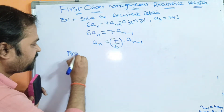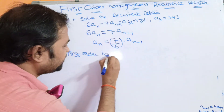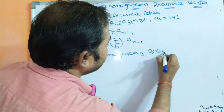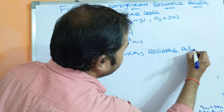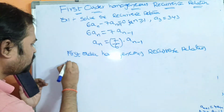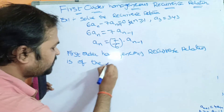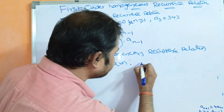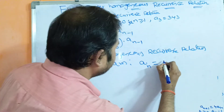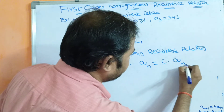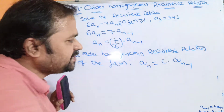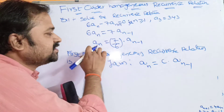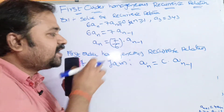The first-order homogeneous recurrence relation is of the form AN = C·AN−1. We can obtain AN from only one term, that is AN−1, which is why this is called a first-order recurrence relation. If we obtained AN from two terms, AN−1 and AN−2, it would be called second-order.